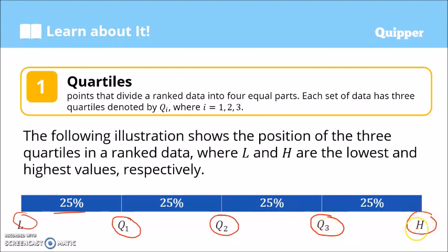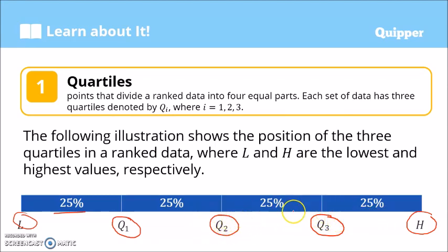And of course, this one is the highest. The third quartile is also called the upper quartile. Just as the first quartile is called the lower quartile, the third quartile is the upper quartile. The third quartile is also the middle value of the data above the median, or to the right of the median — that's the third quartile.